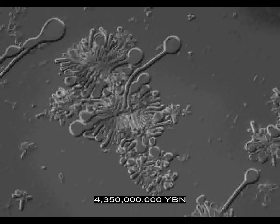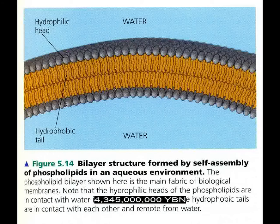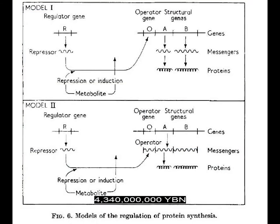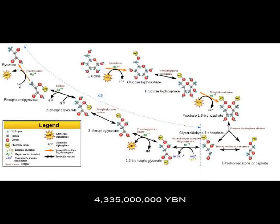Cells make the first lipids on Earth—fats, oils, waxes. A phospholipid bilayer evolves around the cell, providing added protection from the external environment. All extant cells have this phospholipid bilayer. Operons evolve—sequences of DNA that allow a bacterium to produce certain proteins only when necessary. Bacteria before now could only build a constant stream of all proteins encoded in their DNA. Facilitated diffusion: proteins in the cell membrane allow only certain molecules to enter the cell.